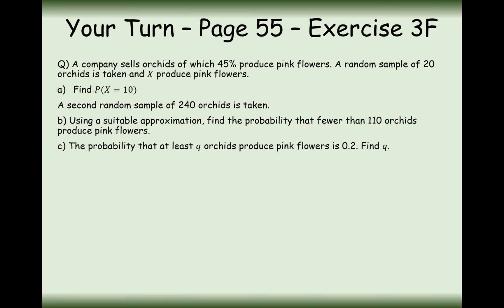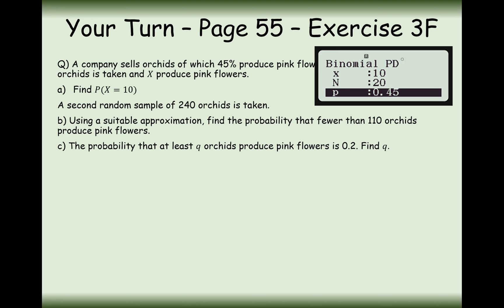A company sells orchids of which 45% produce pink flowers. A random sample of 20 orchids is taken and X produce pink flowers. Find P(X = 10). With only 20 trials, we cannot approximate to the normal distribution — we need n to be more than 50. So use the binomial PD mode on the calculator with n = 20 and p = 0.45. The answer is 0.1593.